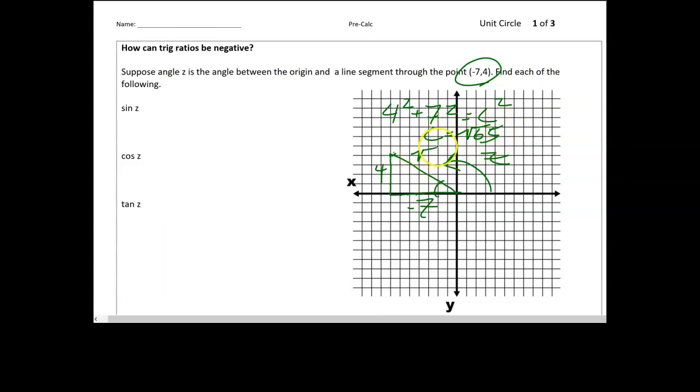So that's the length of this segment here, square root of 65. So sine of z would be opposite 4 over the square root of 65. And then we're going to rationalize. So that's going to be the same as 4 square root 65 over 65. And you guys are good at that pattern now.